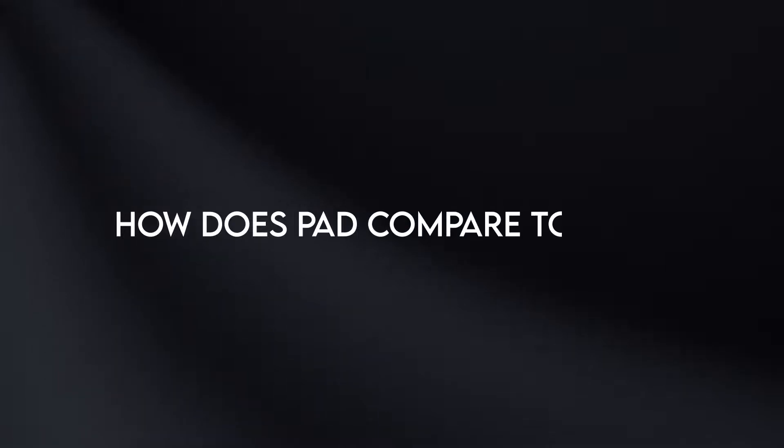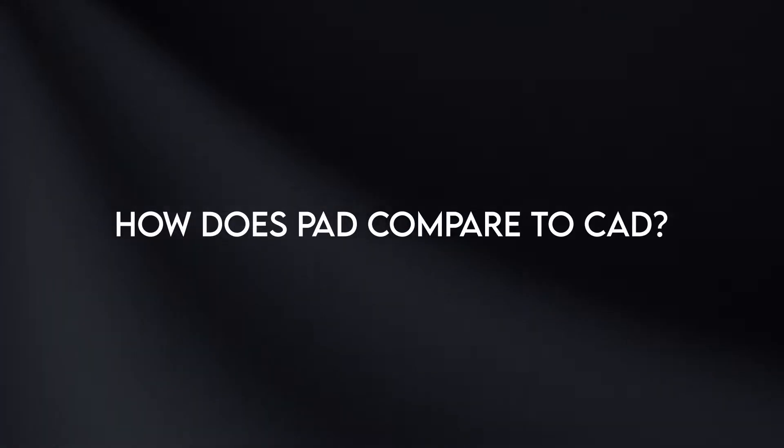How does PAD compare to CAD? PAD is peripheral arterial disease; CAD is coronary artery disease. They're the same disease — arteries getting narrowed and clogged over time, like plumbing gets clogged over time. The only difference is PAD refers to the arteries in the legs, while CAD refers to the arteries in the heart, but it's the same disease otherwise.